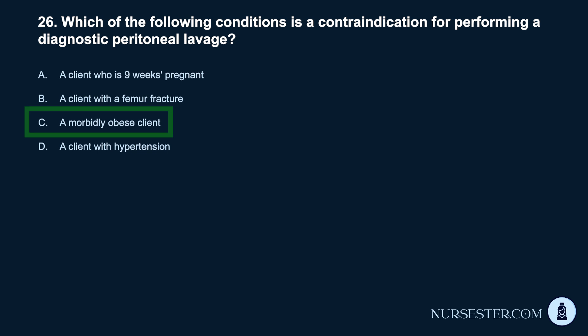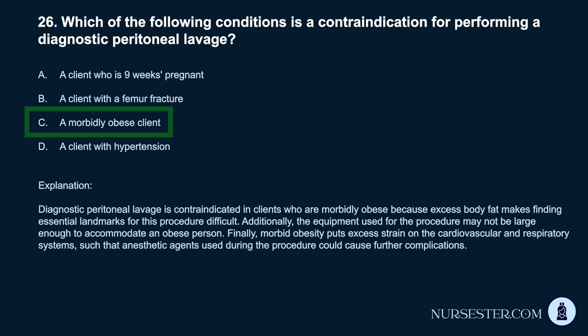Correct answer: C. A morbidly obese client. Diagnostic peritoneal lavage is contraindicated in clients who are morbidly obese because excess body fat makes finding essential landmarks for this procedure difficult. Additionally, the equipment used may not be large enough to accommodate an obese person. Finally, morbid obesity puts excess strain on the cardiovascular and respiratory systems, such that anesthetic agents used during the procedure could cause further complications.